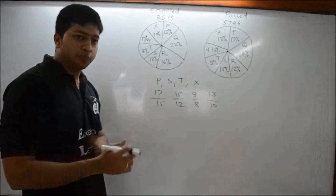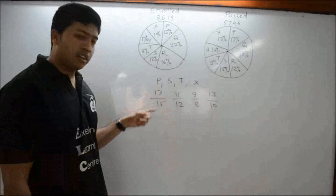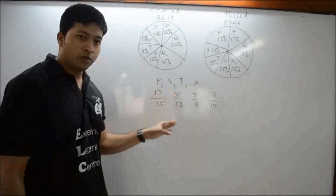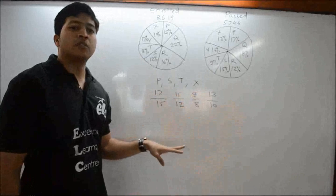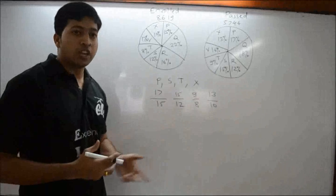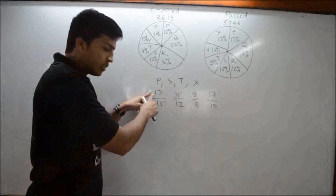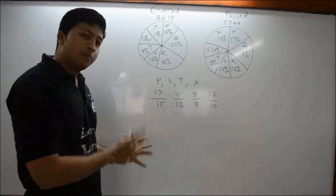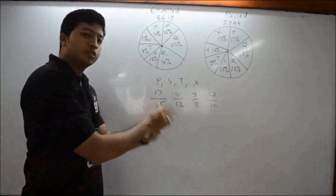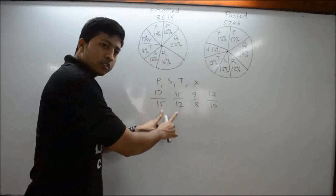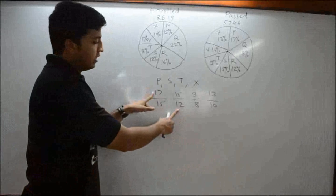The basic method is to convert all fractions to decimals — divide 17 by 15, 15 by 12, 9 by 8, 13 by 10 — but that is also time-consuming. The speed technique is cross-multiplication: compare two fractions at a time. Multiply the numerator of the first fraction by the denominator of the second, then the denominator of the first by the numerator of the second. The larger product indicates the greater fraction; eliminate the smaller one.